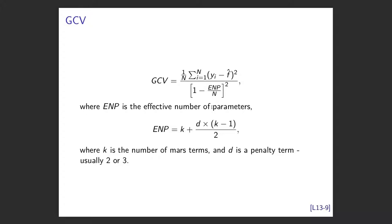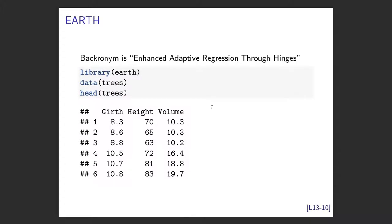And that's MARS. Now the problem with MARS is it was developed by a company that basically copyrights it. So you can use MARS, but you can actually buy a license to do it. But no one does. Instead we use Earth. It was called Earth because the original one was called MARS, and the guy who invented Earth thought Earth would be really good because you go from Mars to Earth. So he invented the backronym. Enhanced Adaptive Regression Through Hinges. There's a library called Earth. So I'll refer to the MARS method, but the implementation is with the Earth package.